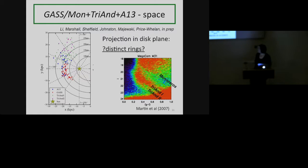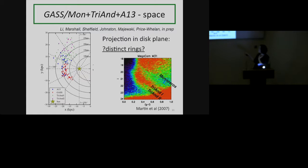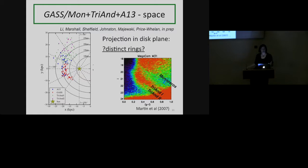One way you can see that these structures are distinct in space is by looking at what's called a color-magnitude diagram. What you're supposed to see are three distinct sequences corresponding to the green, pink, and red points. The fact that you see distinct sequences is indicative that these are quite distinct — these look more like rings than the projection might suggest. To give you a sense of scale, these structures sit well beyond what we think of as the edge of the galactic disk, at far greater heights above and below the galactic plane.